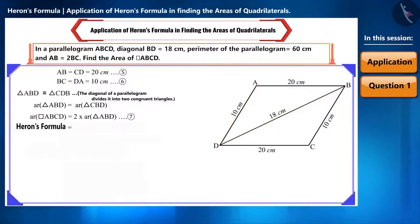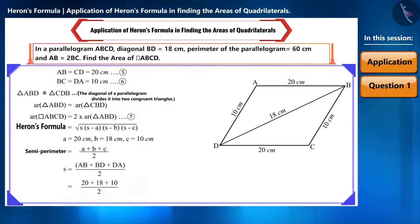Heron's formula is square root of S times (S minus A) times (S minus B) times (S minus C). We will substitute the value of A equal to 20 cm, B equal to 18 cm and C equal to 10 cm. Now, we will find the semi-perimeter that is S. Here, we got semi-perimeter as 24 cm.